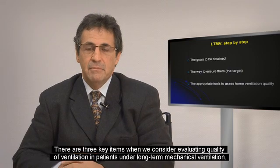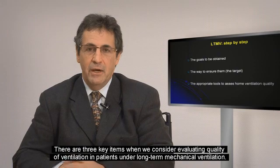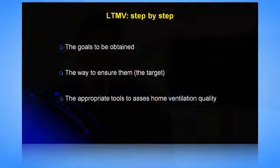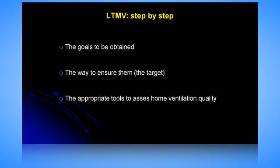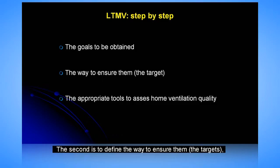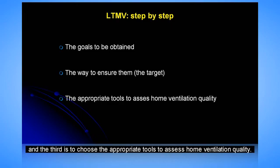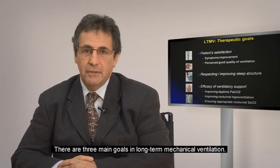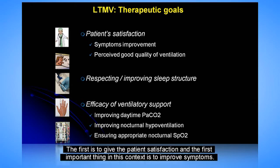There are three key items when evaluating quality of ventilation in patients under long-term mechanical ventilation: first, defining the goals to be obtained; second, defining the way to ensure them — that is the target; and third, choosing the appropriate tools to assess home ventilation quality. The first main therapeutic goal is to give the patient satisfaction, by improving symptoms and giving comfort — a good perception of quality of ventilation.